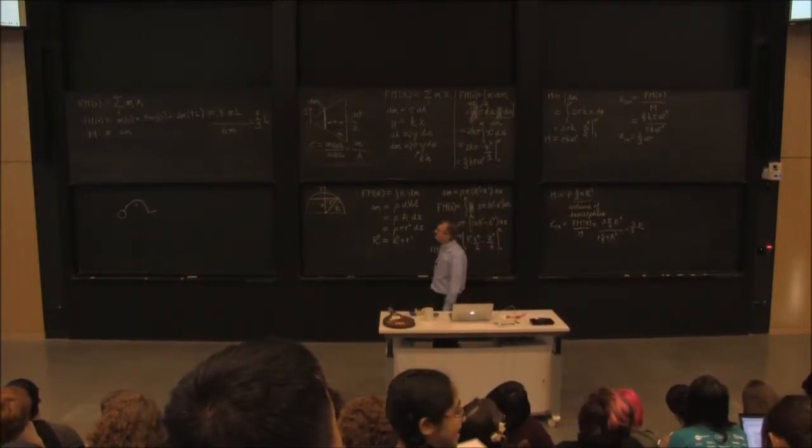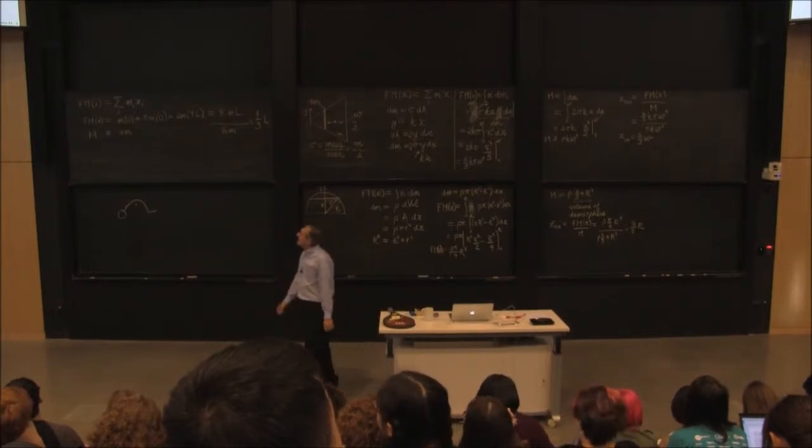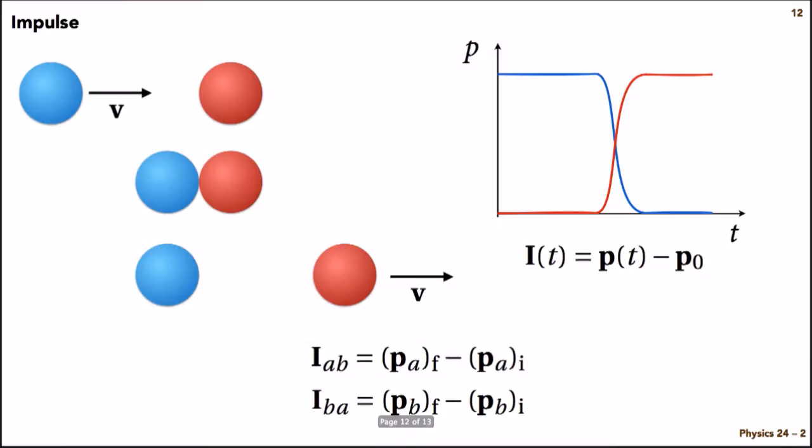So we define impulse. It's typically used in a collision process. But the general definition of impulse is the change in the momentum of some object.